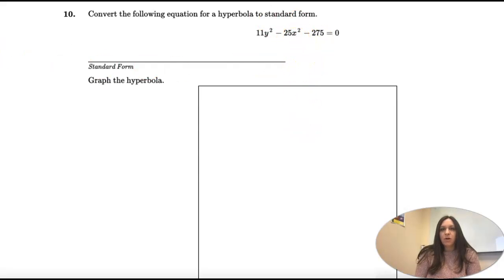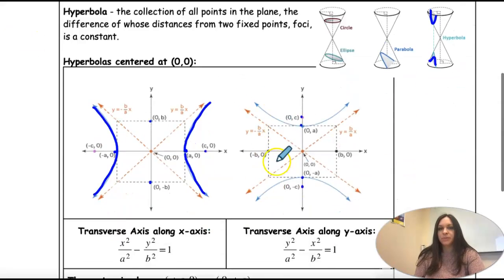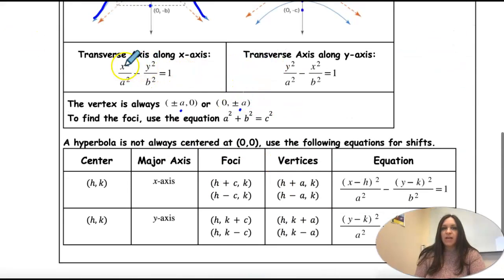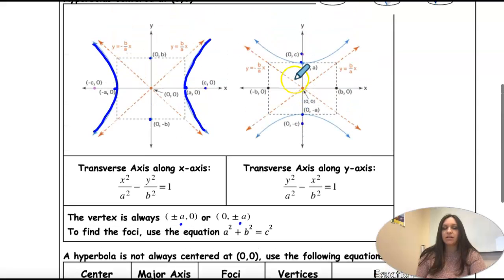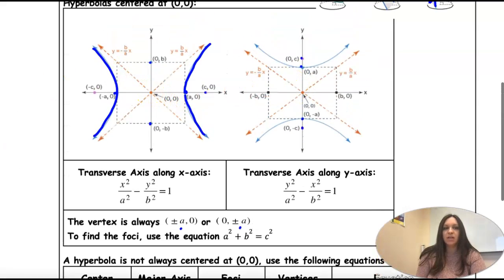So standard form are these ones. And we just have x squared, y squared. And that means that our center is going to be at the origin.